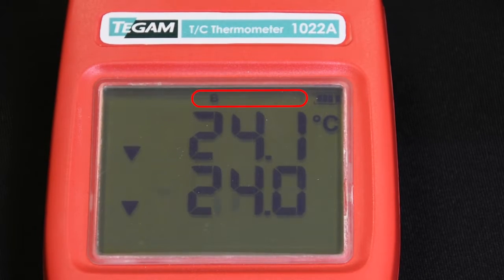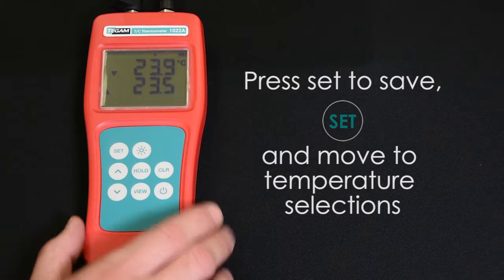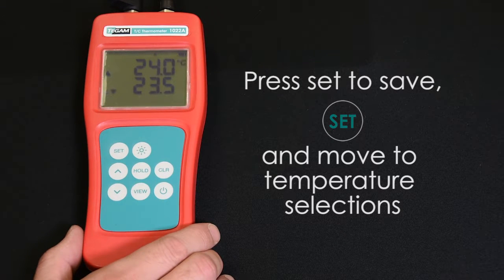To save your selected thermocouple type, momentarily press the set key to save that setting and move to the temperature units.